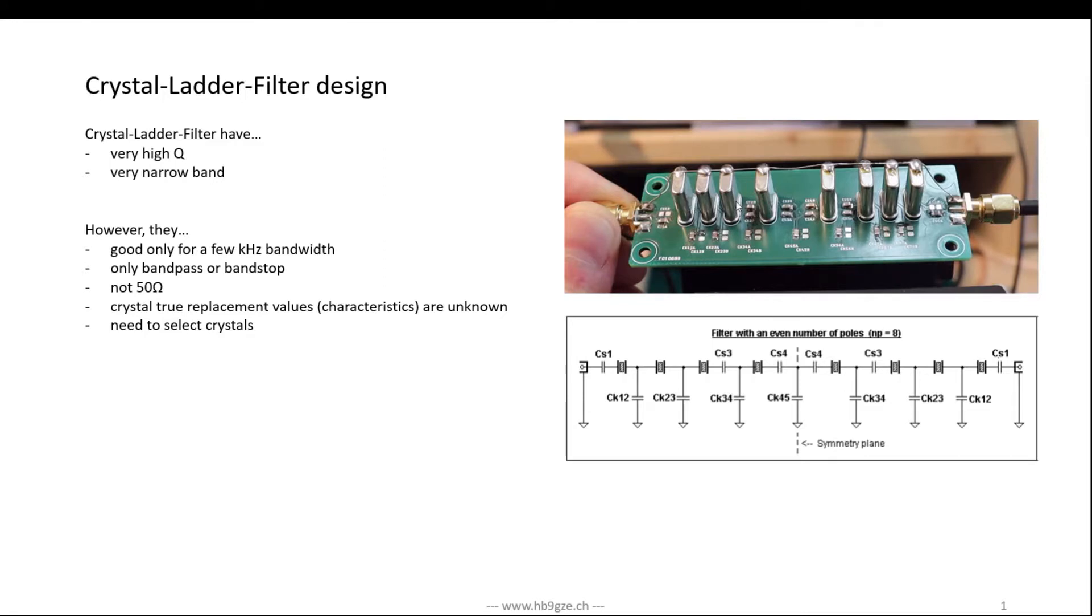You select them to their series resonance frequency and pick the ones closest to each other. You shouldn't have more than about 50 hertz difference from one to the other. These crystals are in a row, typically with a series capacitor for tuning each crystal.